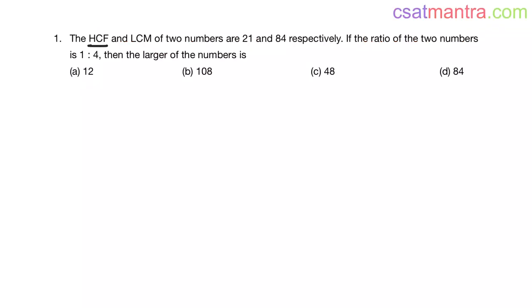The HCF and LCM of two numbers are 21 and 84 respectively. If the ratio of the two numbers is 1 is to 4, then the larger of the numbers is.